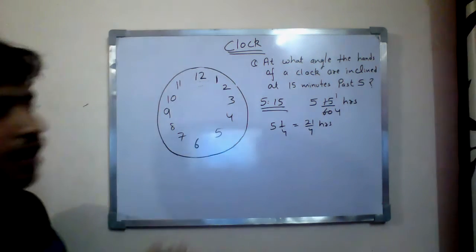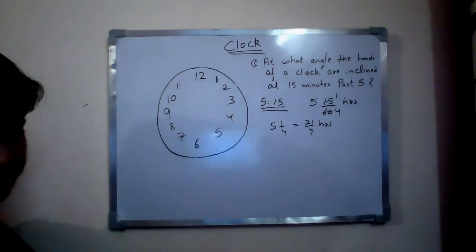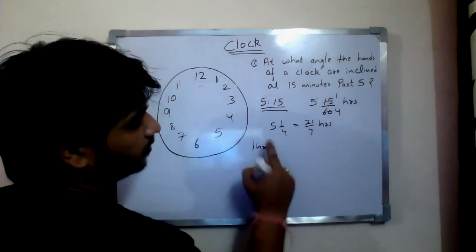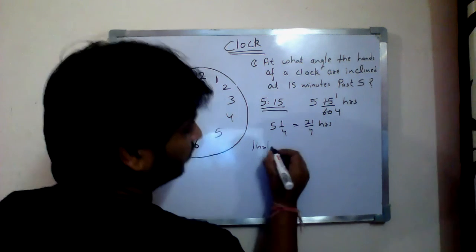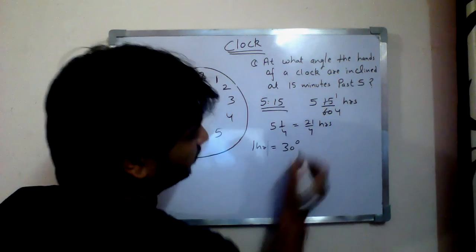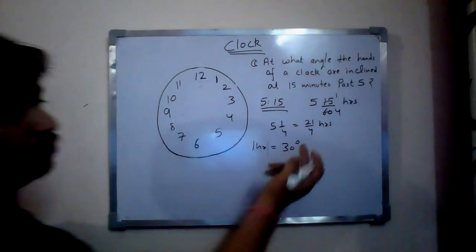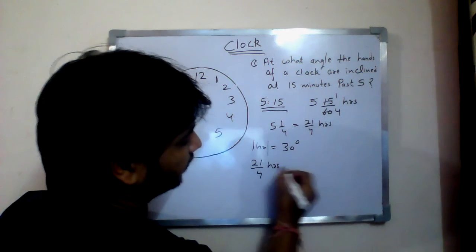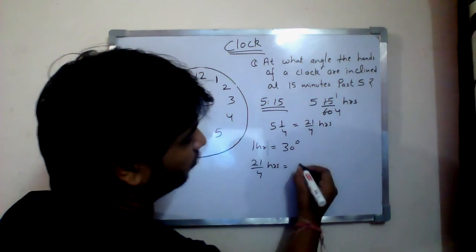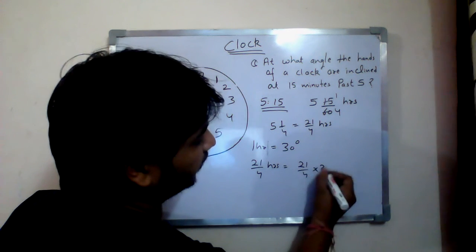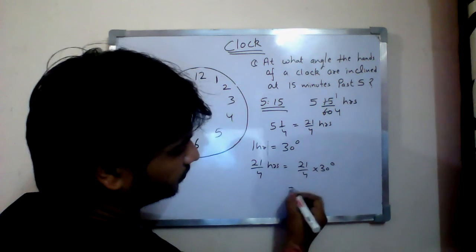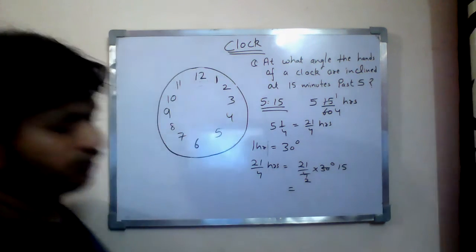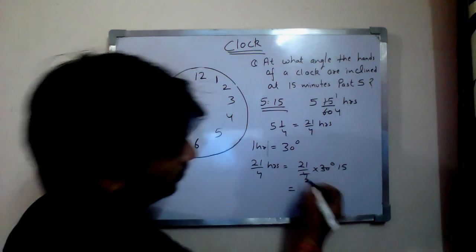Now we have 21/4 hours. We know that in one hour the hour hand moves 30 degrees, so in 21/4 hours it will move 21/4 multiplied by 30 degrees.